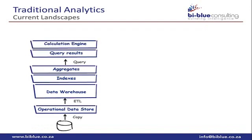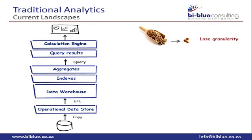From the data warehouse, businesses can query the data. Depending on the BI platform used, further calculations occur before the data is displayed. This process creates problems: you lose granularity due to aggregation, and businesses need to compromise between speed and detail — the more detail, the longer it takes to retrieve data. Most of these solutions are disk-based.